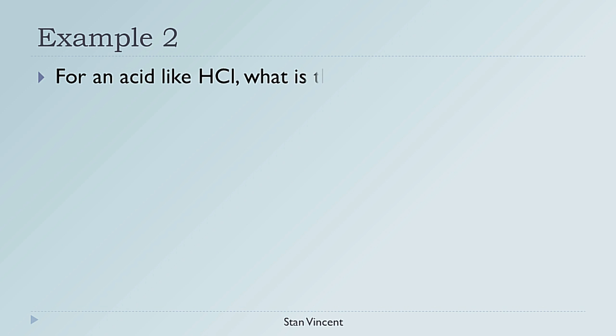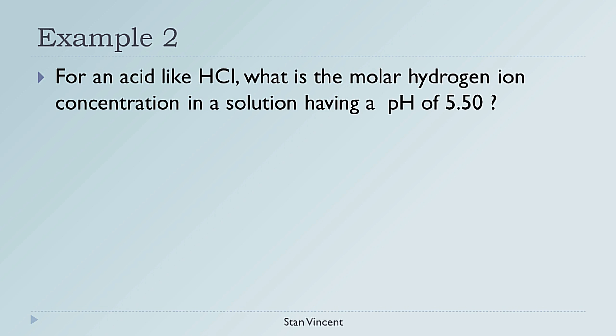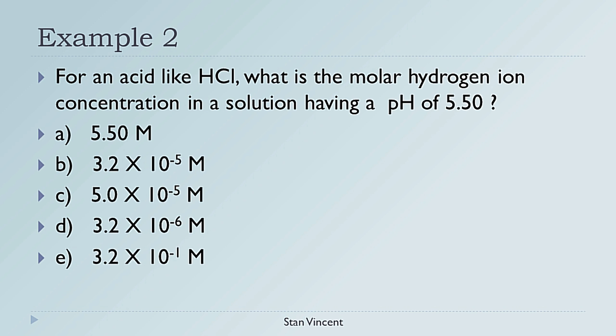Example 2: For an acid, what is the molar hydrogen ion concentration in a solution of pH 5.50? Pause the video now, solve the problem, and pick the best answer from the five choices provided. This is how you solve it.